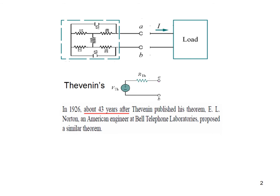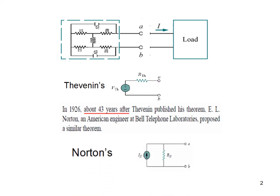Now, 43 years after his theorem, Mr. Norton from Bell Telephone Laboratories came up with another similar idea. His idea was that instead of finding voltage at this point, if you can find the current through this point — and the resistance remains the same — we can have another circuit with that current and the resistance in parallel, same resistance as R-Thevenin. This is known as Norton's theorem, and with this you can connect the load and find the load current and voltage.